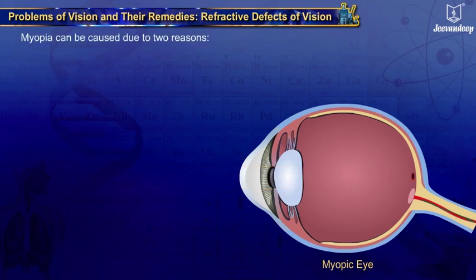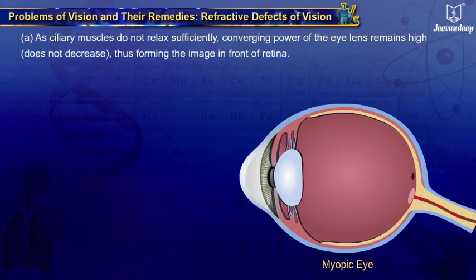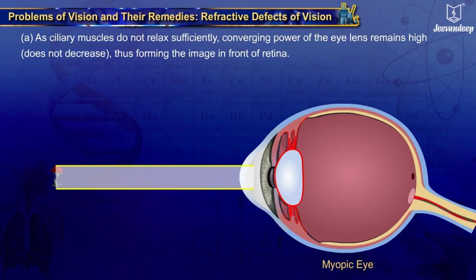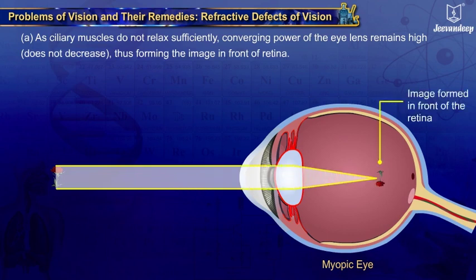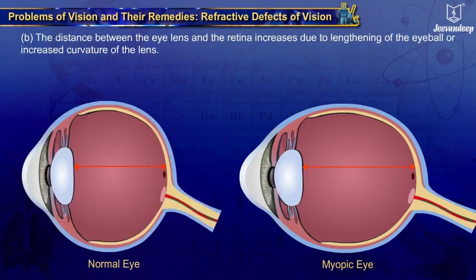Myopia can be caused due to two reasons. A. As ciliary muscles do not relax sufficiently, the converging power of the eye lens remains high and does not decrease, thus forming the image in front of the retina. B. The distance between the eye lens and the retina increases due to lengthening of the eyeball or increased curvature of the lens.